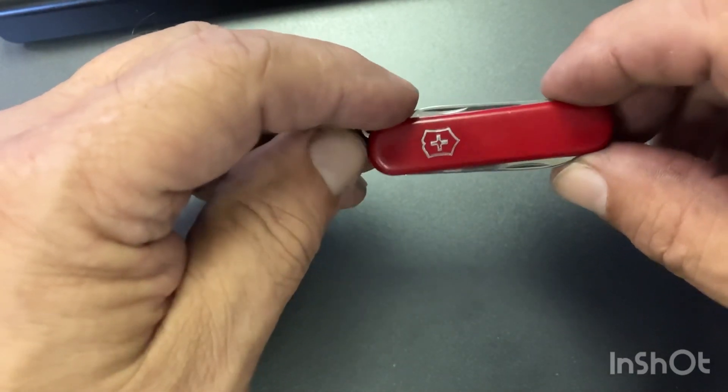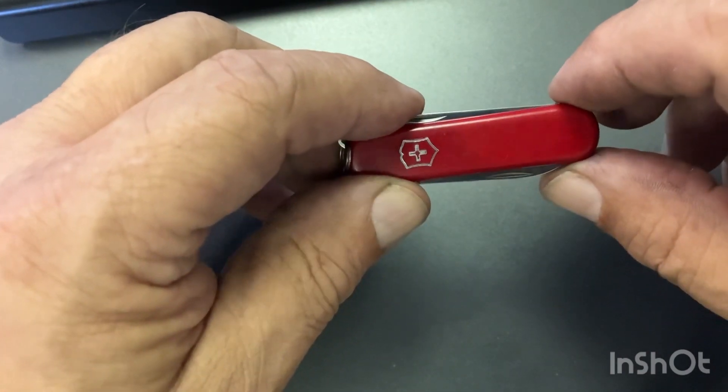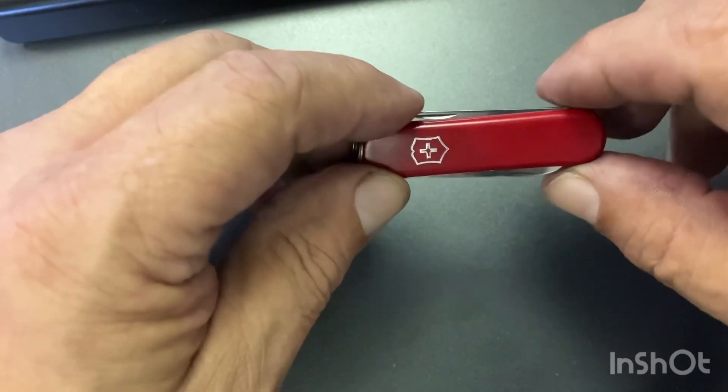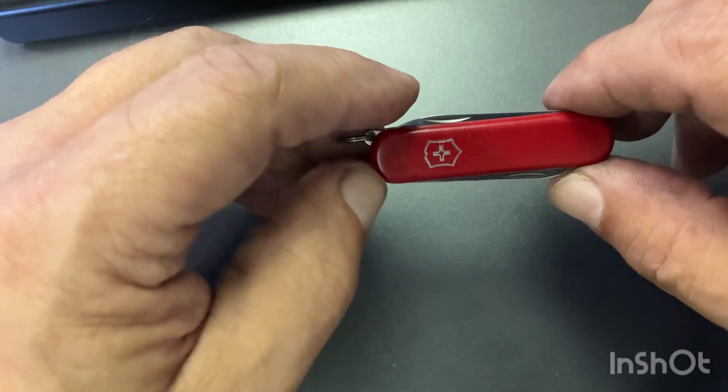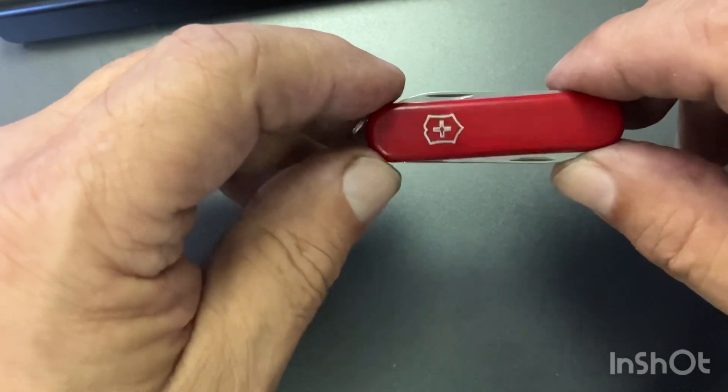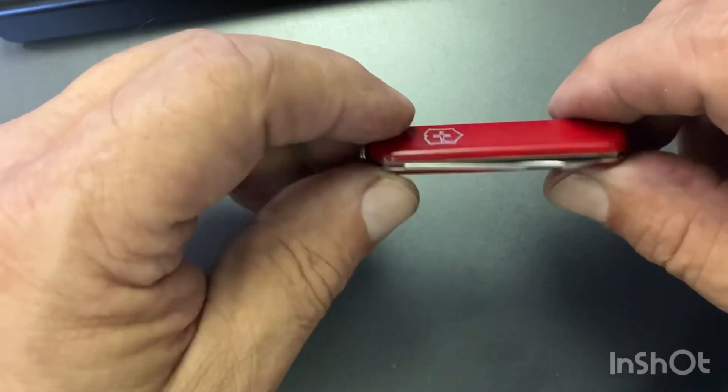So if you go to the Victorinox website, you can still buy these with the toothpick and the tweezers. And I think it's around $15 for this knife, something to that effect. Really, really reasonable.